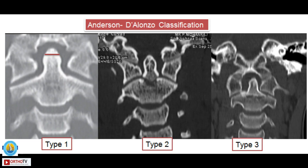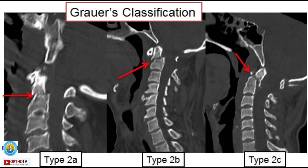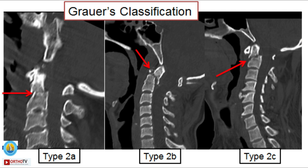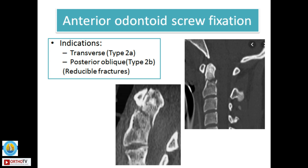The classical description by Anderson and D'Alonzo classifies odontoid fractures into type 1, type 2, and type 3. Type 1 and type 3 can usually be treated conservatively, whereas type 2 is the one which most commonly requires surgical stabilization. Type 2 is further classified into 2A, 2B, and 2C. Types 2A and 2B are ideal candidates for odontoid screw fixation, but the fracture pattern of 2C is a contraindication. Type 2A, which is a transverse fracture, and the posterior oblique 2B are indications for anterior odontoid screw fixation.